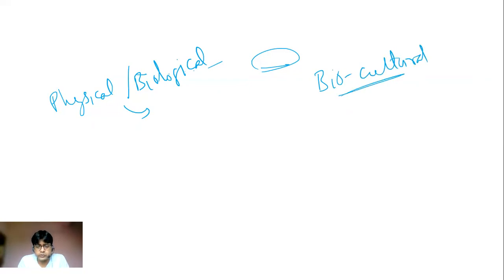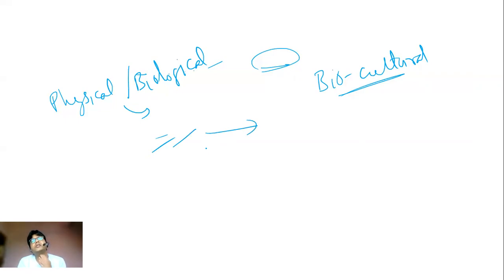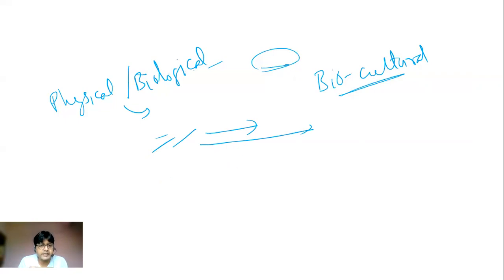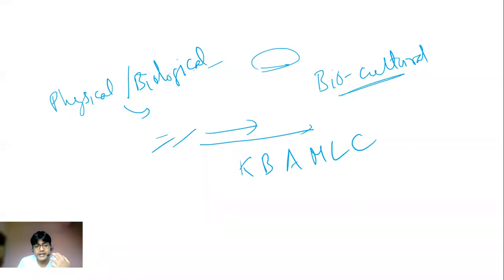Begin your answer by defining culture. Since the question asks what enabled man to make culture, start by explaining what culture is. You can use the definition by E.B. Tylor from his book Primitive Cultures (1871): 'Culture is that complex whole which includes knowledge, belief, arts, morals, laws, and customs, and any other learned behavior acquired as a member of society.' This is a comprehensive definition.